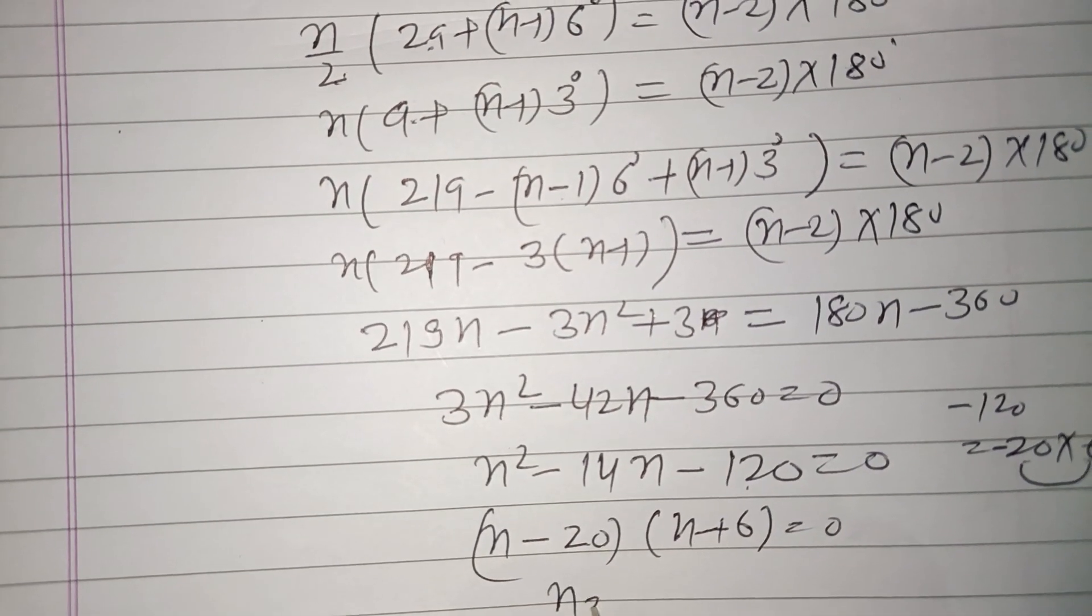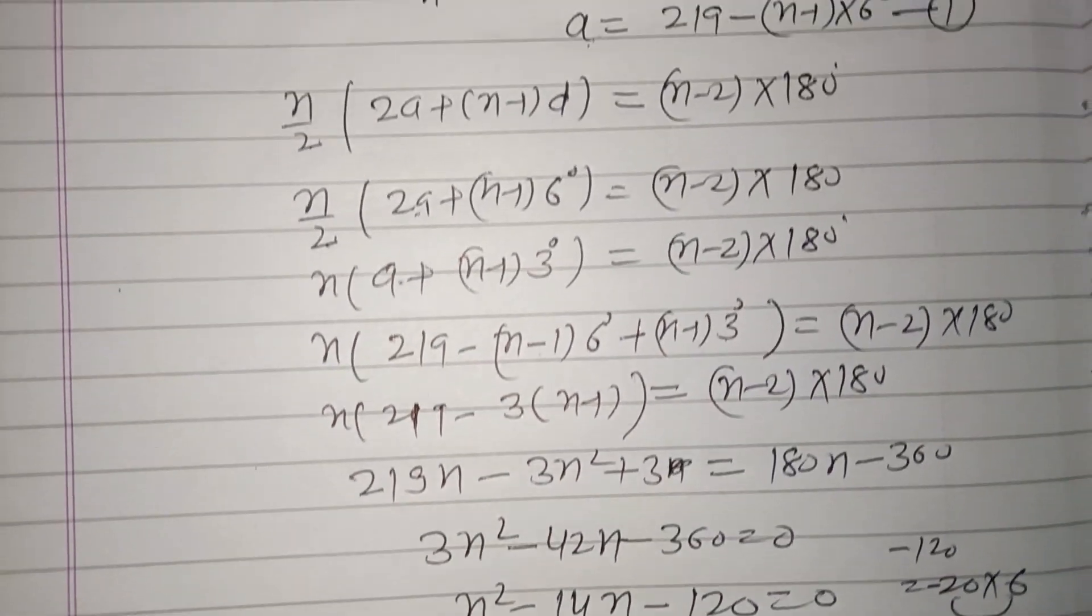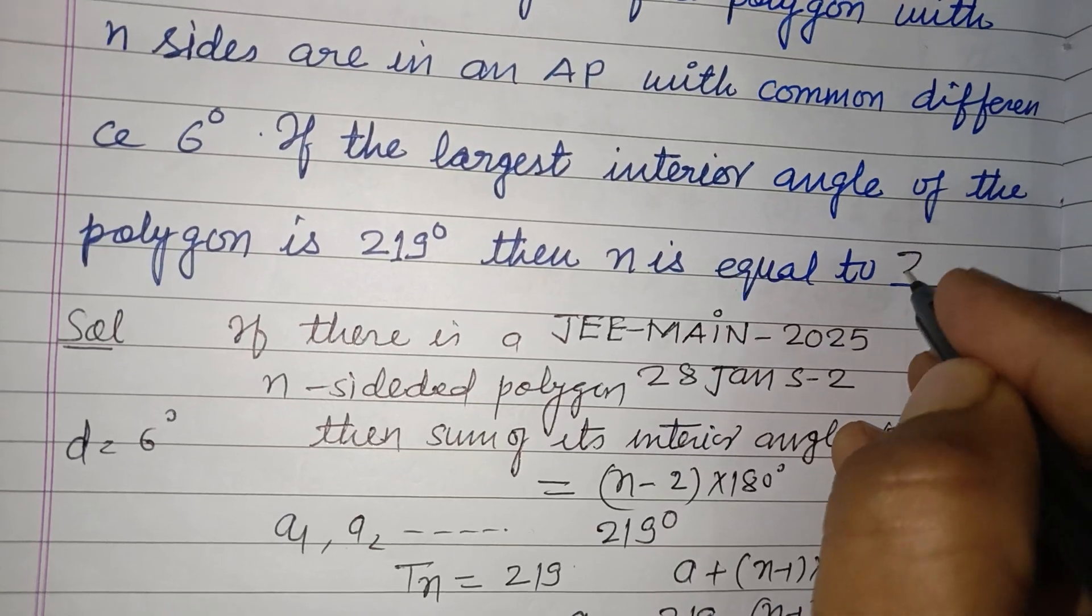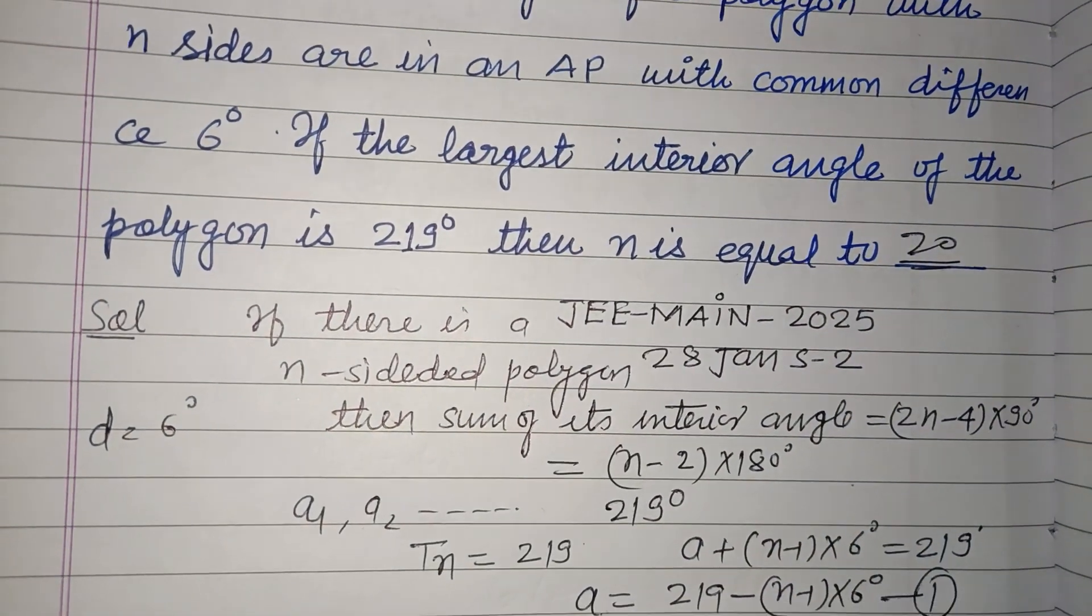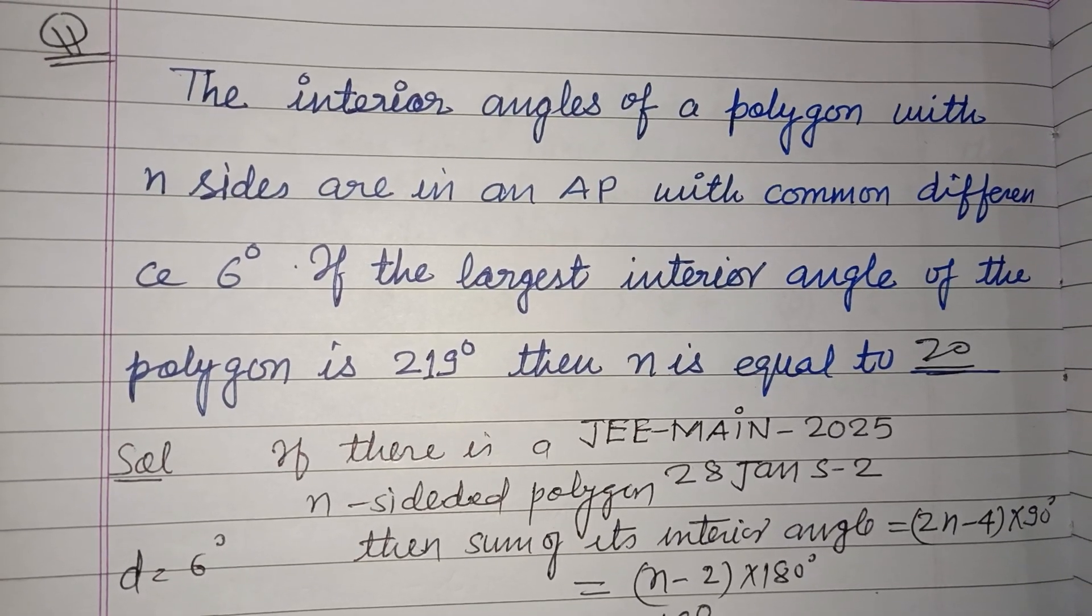Equals 0. Therefore n equals 20. So 20 is the correct answer to this question. I hope you got it. Please like the video, subscribe the channel. Thanks for watching.